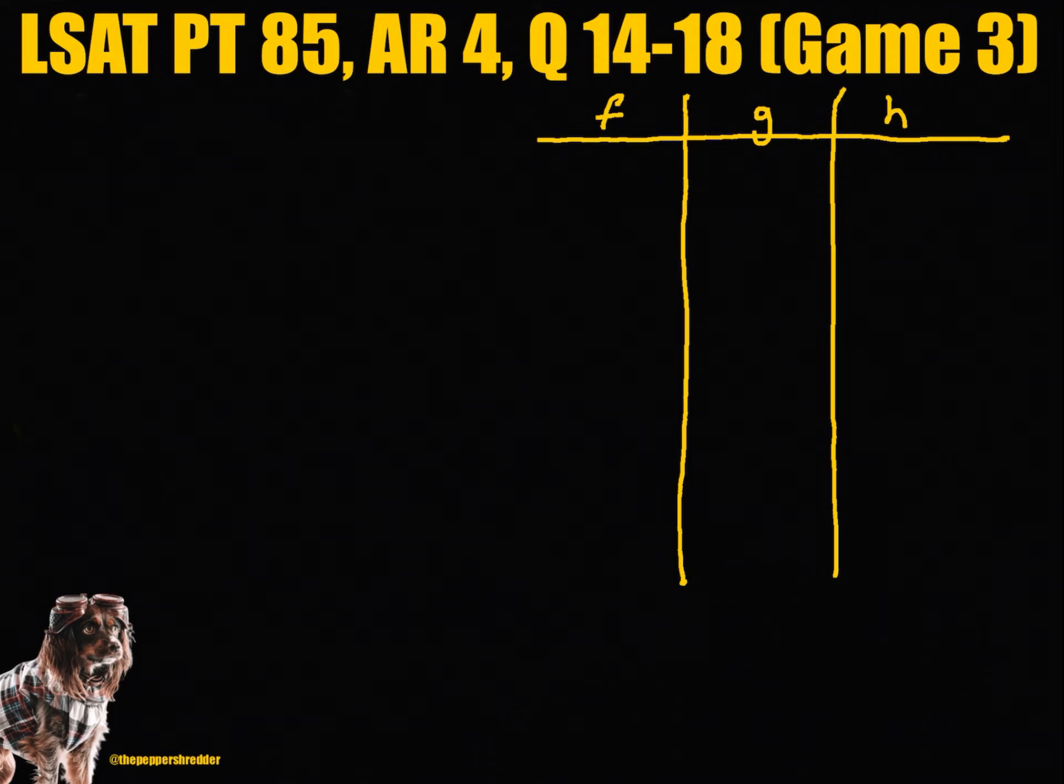We're looking at LSAT PrepTest 85, Analytical Reasoning Section 4, Questions 14 through 18. Game 3 is a grouping game. The facts are as follows: there are six actors L, M, P, R, S, and Z. Each actor must be placed exactly one time. There are three groups F, G, and H.